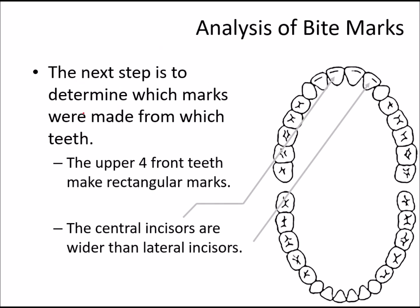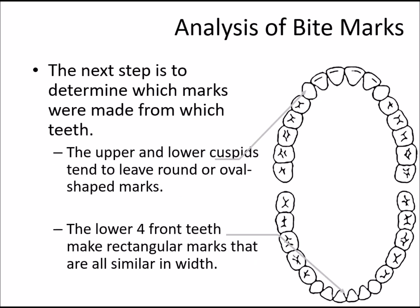The next step is to determine which marks were made by which teeth. Upper front teeth make a rectangular mark; central incisors are wider than lateral incisors. Upper and lower cusps tend to leave round and oval marks in the case of molars and premolars. Lower four front teeth make rectangular marks similar in width.